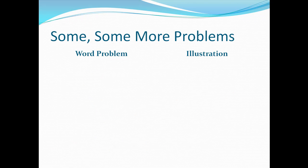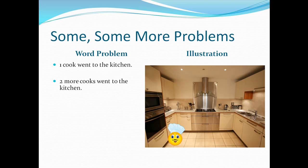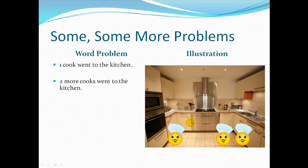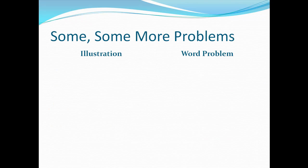Let's try acting out another story. This time we start out in a kitchen, and we have one cook in the kitchen. Two more cooks then come to the kitchen to join him — some, some more. How many cooks are in the kitchen now? I can see it's three. Our number sentence would have to say one cook plus two cooks equals three cooks total, because there was one there to start and then two more came along. So we have three cooks total. One was there, two more came — some, some more problem.